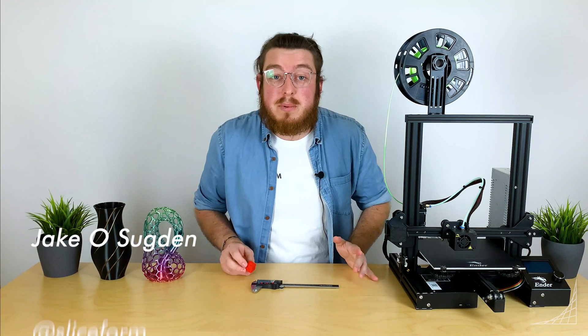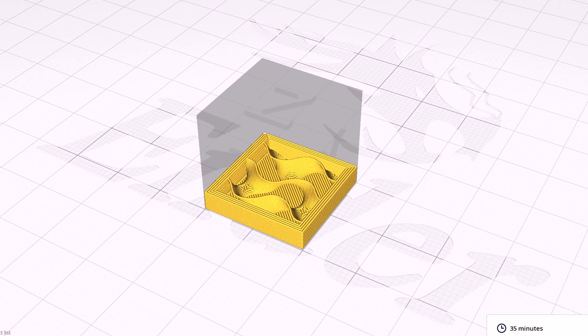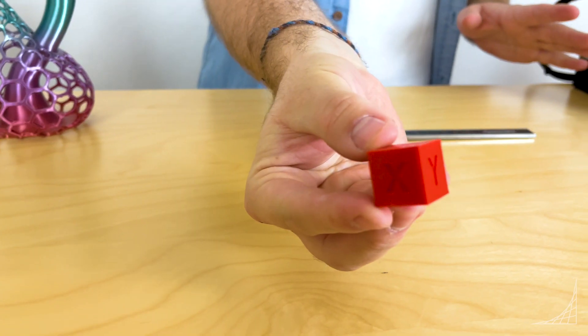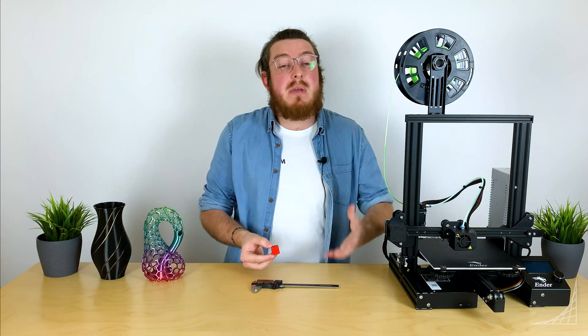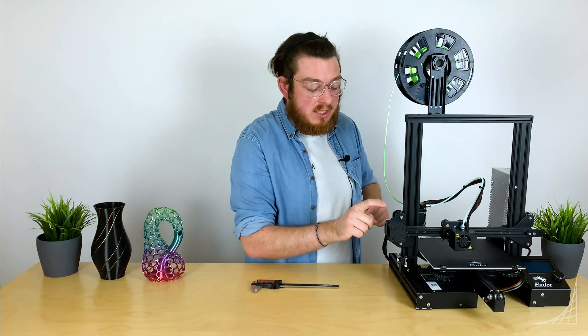So first off we are going to be printing what's known as a calibration cube. This is a part that has a known measurement. It's something that you can print very easily and if you measure it and your value doesn't meet what it's supposed to, then you know something is wrong with your stepper motors.